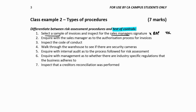The key difference is: in a risk assessment, you're trying to gather information to understand; in a test of control, you're actually testing the control itself — in this case, an authorization control. Inquiring with the sales manager about the authorization process for invoices is a risk assessment procedure. You're just asking how they authorize — gathering information — and simply asking about the process doesn't give evidence that the control is working.